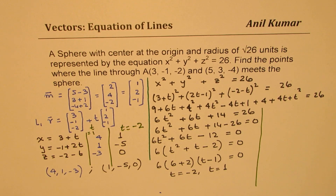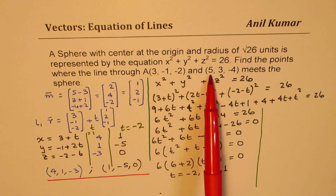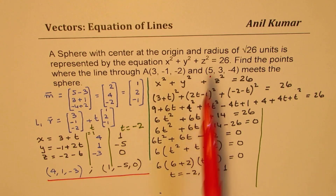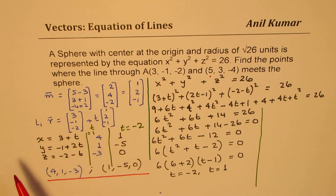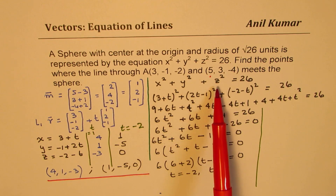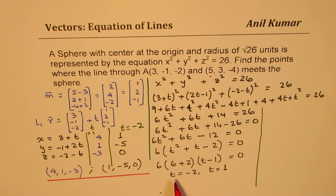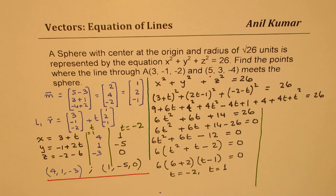So that is how we solve it. I hope the steps are absolutely clear. In the beginning, we found the equation of the line using two points — the direction was simplified as (1, 2, -1). Taking point A, we got x equals 3 plus t, y equals minus 1 plus 2t, z equals minus 2 minus t. Substituting these into the sphere equation, expanding and simplifying, we got the value of t. Putting t back into the line equation gave the two points of intersection. As an extension, you can find the distance between them if required.